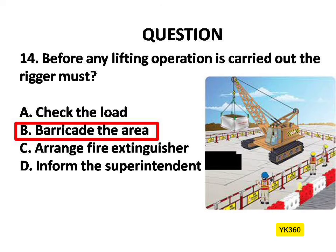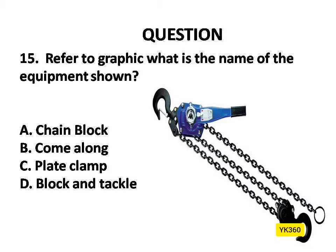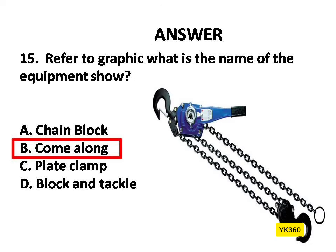Question Number 15. Refer to graphic — what is the name of the equipment shown? Options are: A. Chain block, B. Come along, C. Plate clamp, D. Block and tackle. The answer is Option B: Come along.